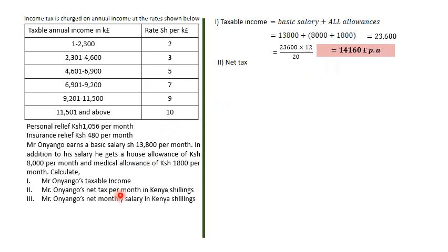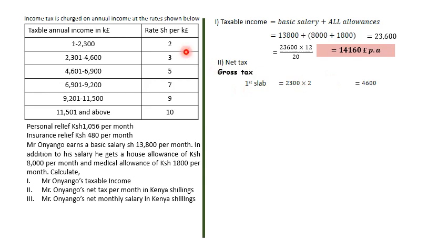For part two, we find Mr. Onyango's net tax per month in Kenya shillings. Notice the table figures are in multiples of 2,300. Each slab is 2,300 wide. Gross tax is calculated as: first slab — 2,300 × 2 = 4,600; second slab — 2,300 × 3 = 6,900.